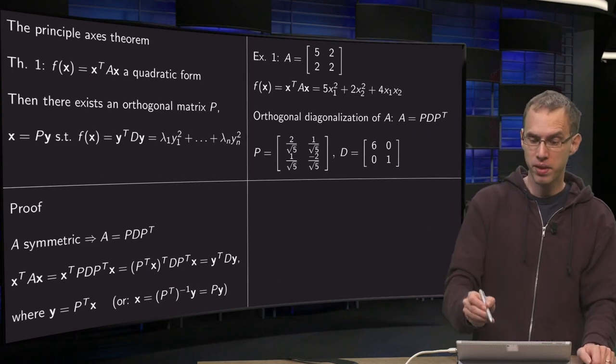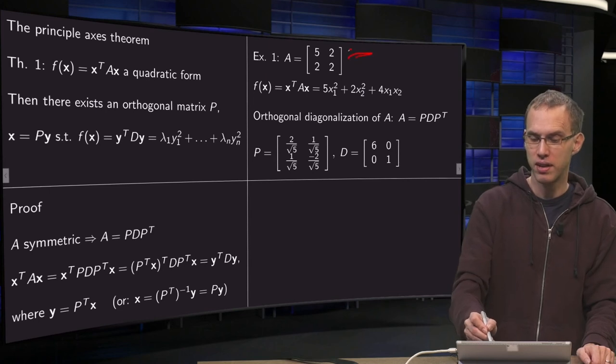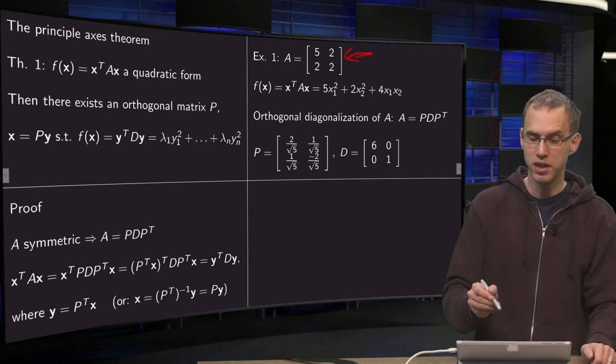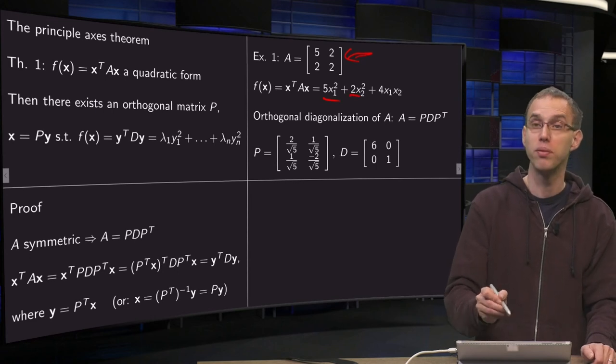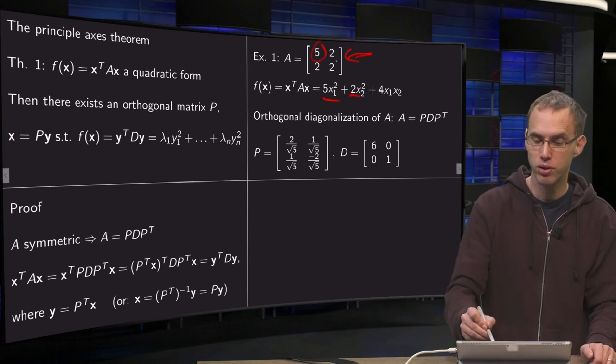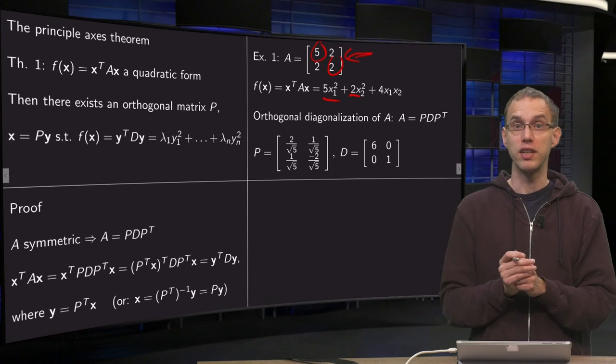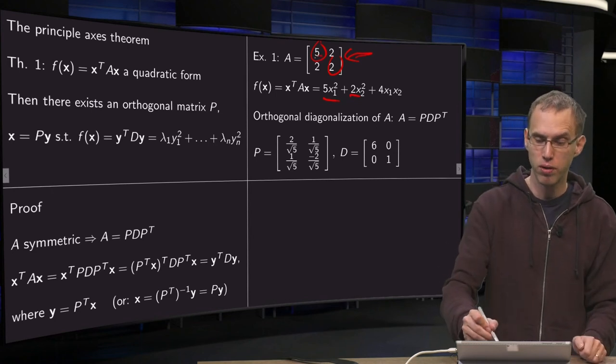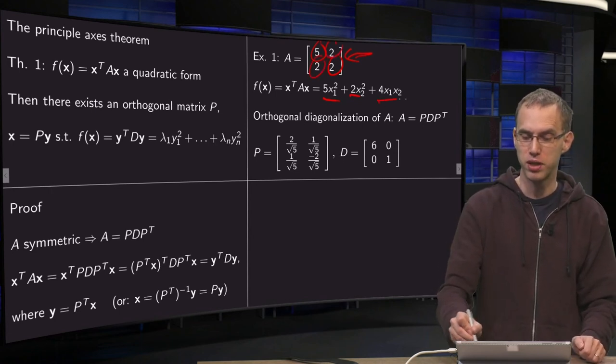So let's try an example. Here we have our matrix A, and the corresponding quadratic form: 5x1 squared plus 2x2 squared from the diagonal terms, and the x1 and x2 is shared between the two off-diagonal terms, so you get 4 times x1 times x2.